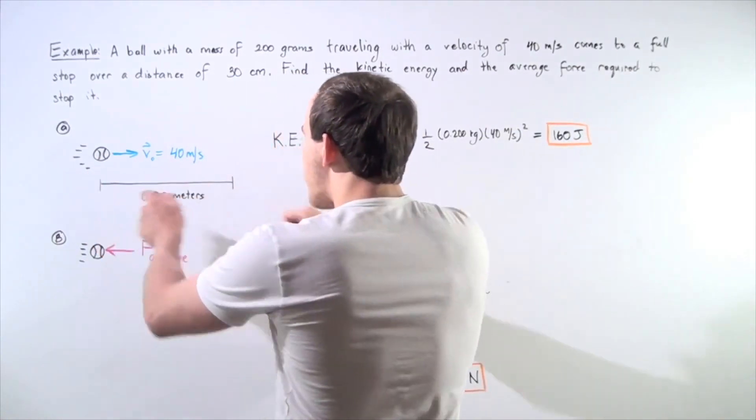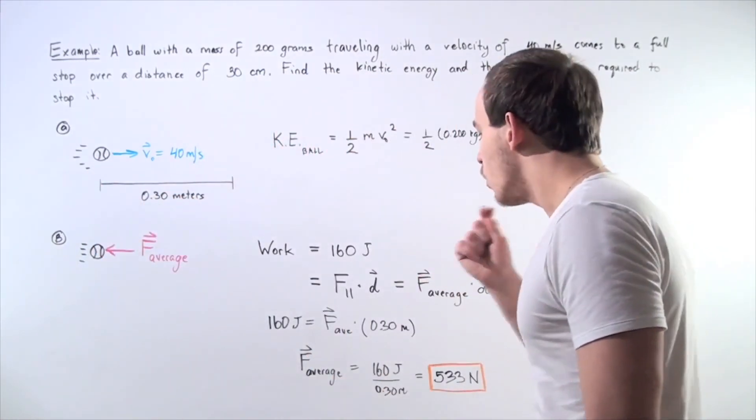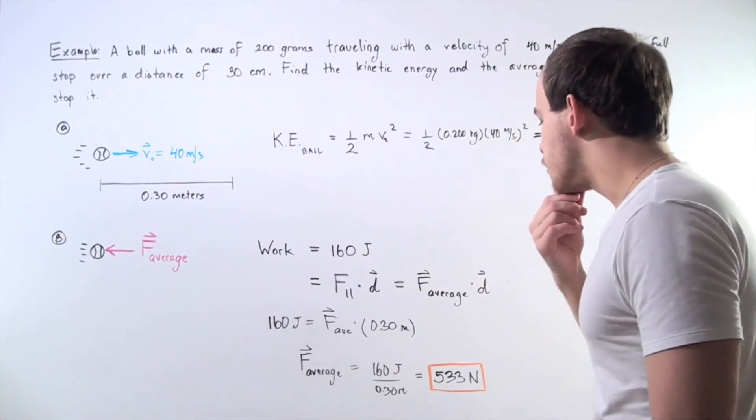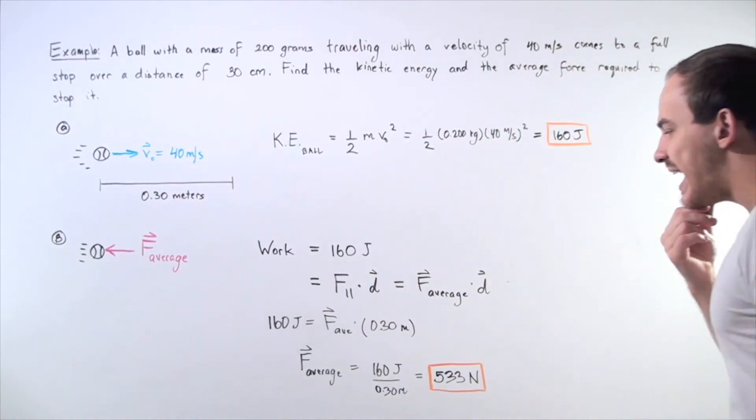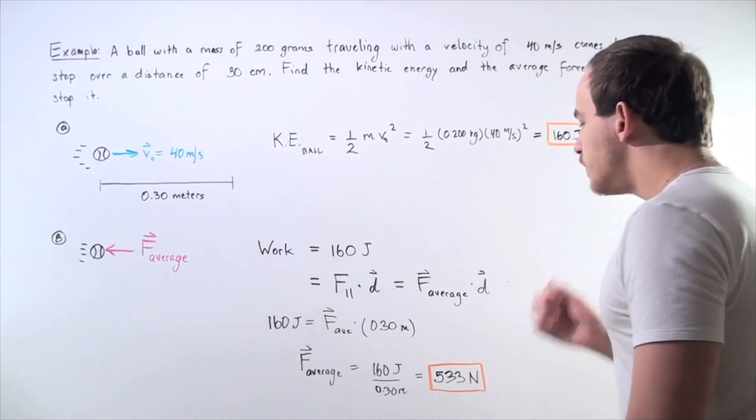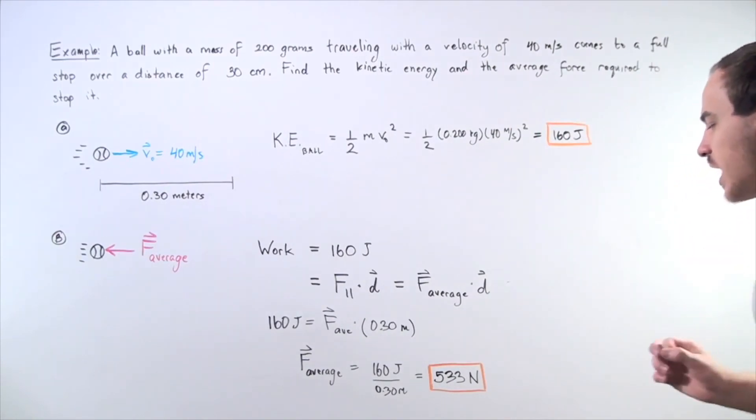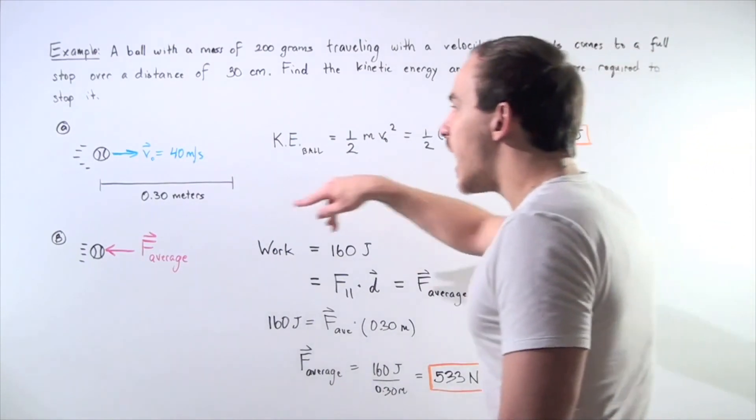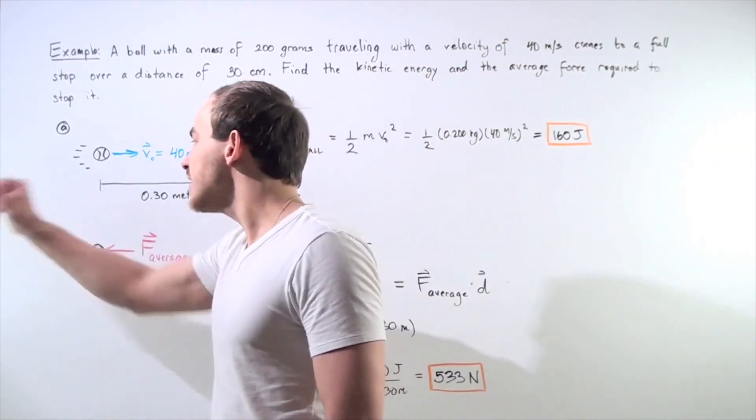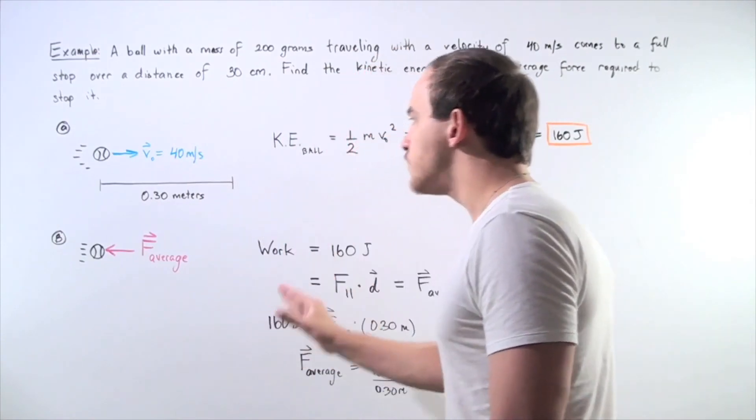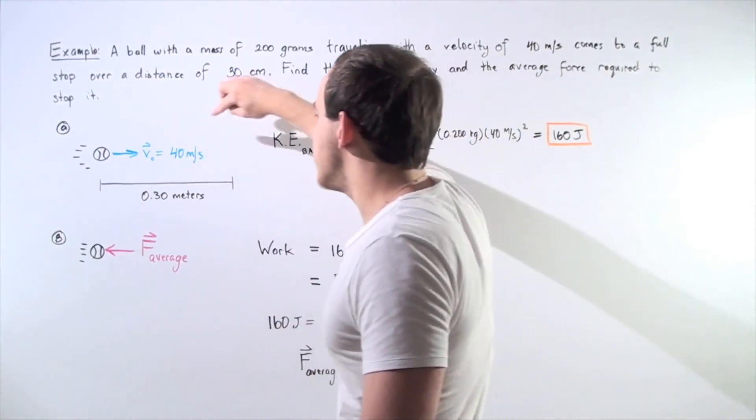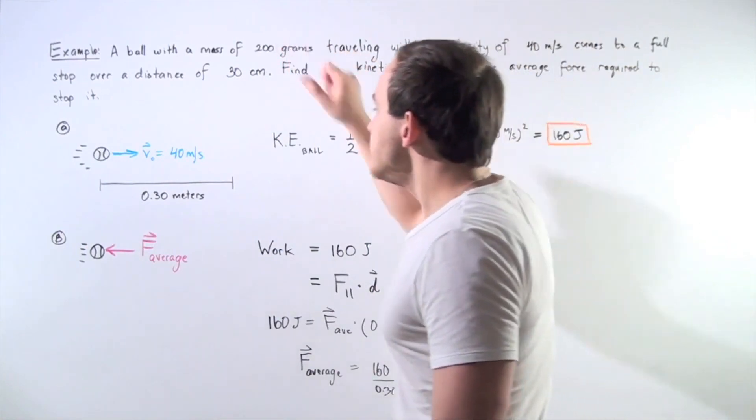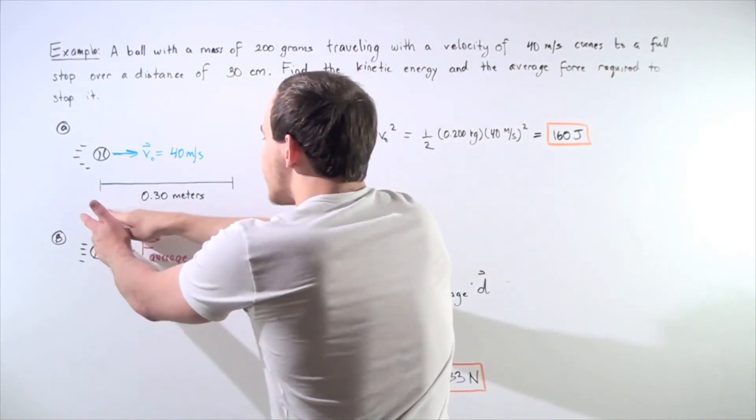We divide both sides by 0.3 meters and we get an average force of approximately 533 newtons. So it requires this average force acting on the object pointing in this direction to stop our object that has an initial velocity of this much, a mass of this much over a distance of 0.3 meters.